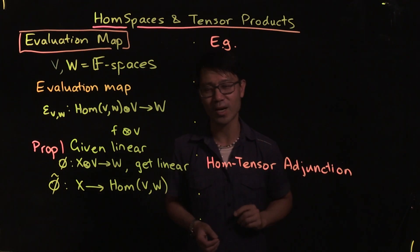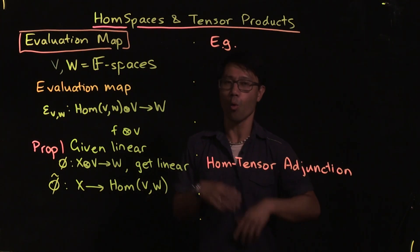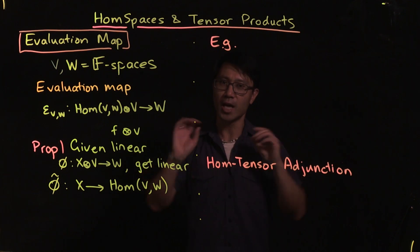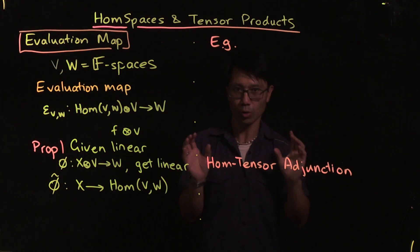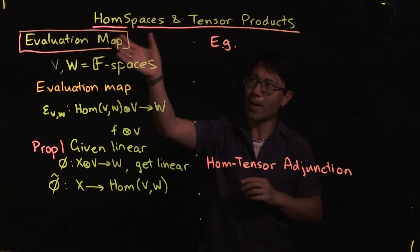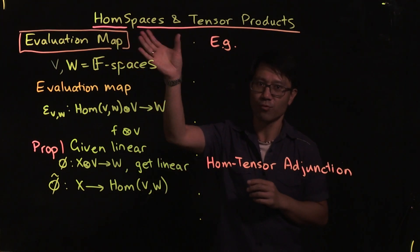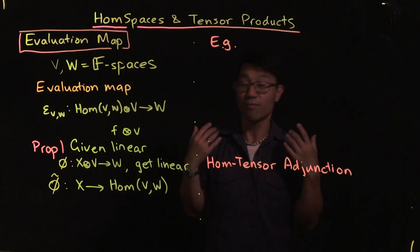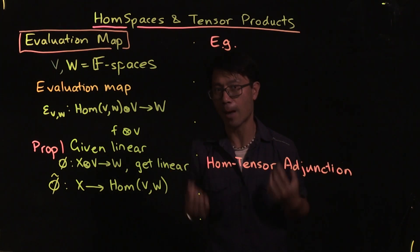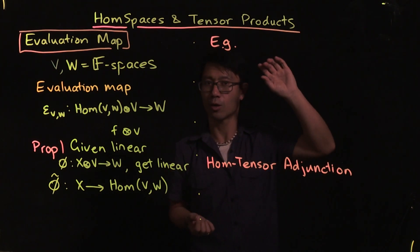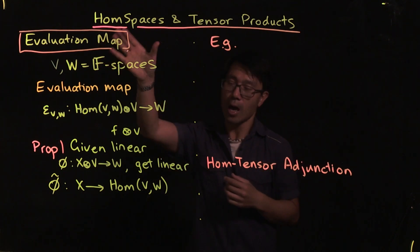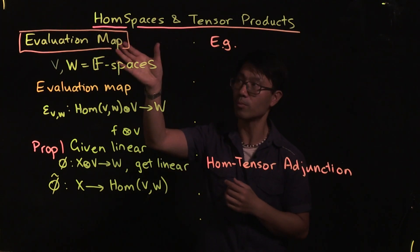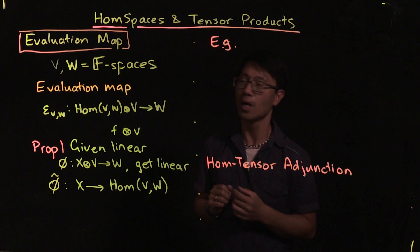Hi, I'm Daniel Chan from UNSW Sydney. Welcome to another adventure in pure mathematics. Today, I want to look at a way that you can talk about hom spaces, view them via the notion of tensor products. This is a very interesting application of tensor products, which allows you to look at something which is fairly familiar from usual linear algebra classes.